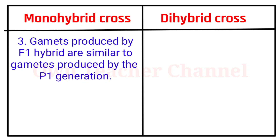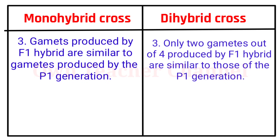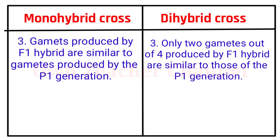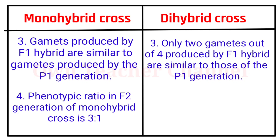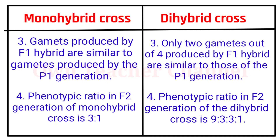In a monohybrid cross, gametes produced by F1 hybrid are similar to gametes produced by the P1 generation. In a dihybrid cross, only two gametes out of four produced by F1 hybrid are similar to those of the P1 generation. Phenotypic ratio in F2 generation of monohybrid cross is 3:1. Phenotypic ratio in F2 generation of dihybrid cross is 9:3:3:1.